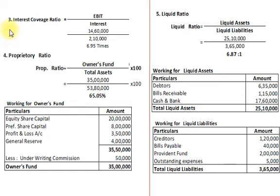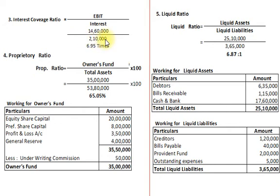Third ratio: Interest Coverage Ratio. Formula: Earnings Before Interest and Tax (EBIT) ÷ interest. EBIT is Rs. 14,60,000 (given) divided by interest on debentures Rs. 2,10,000 = Interest Coverage Ratio 6.95 times.